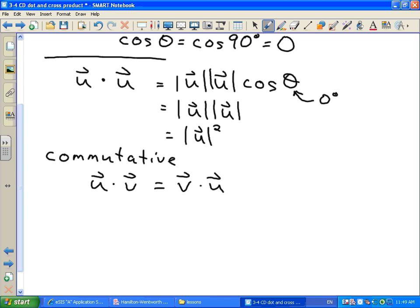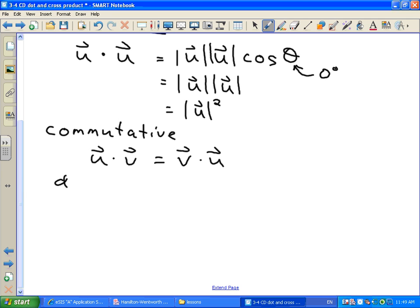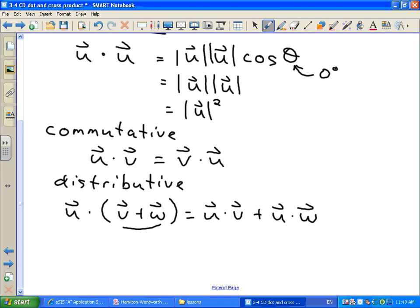And well, there's a couple of other properties too. It's also distributive which means if I have something that is u dot (v plus w). So I have two vectors added together v and w and I want to do the dot product. I could do this vector addition first or I can distribute the dot product to both of them and get u dot v plus u dot w. So it's both commutative and distributive. And that's the dot product.